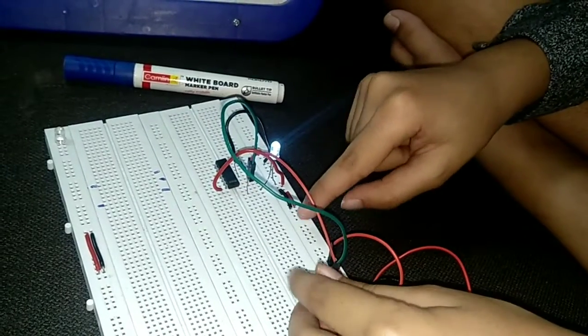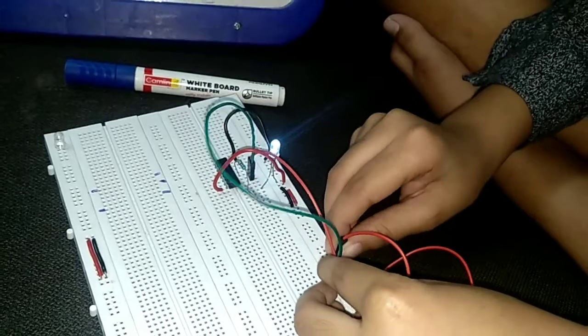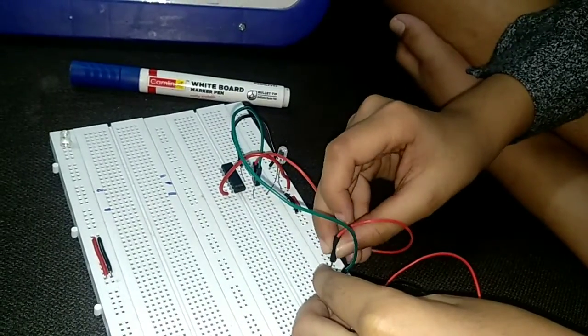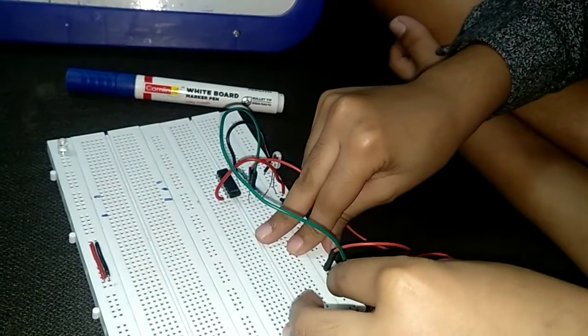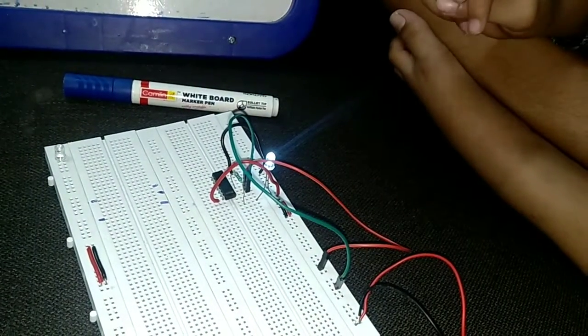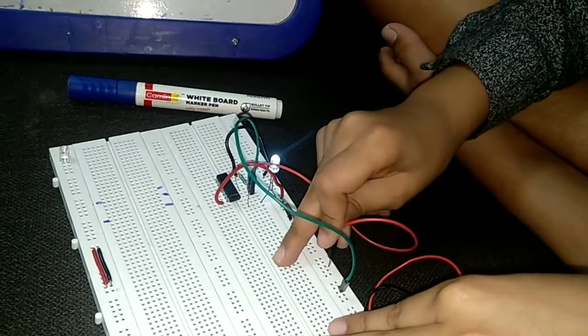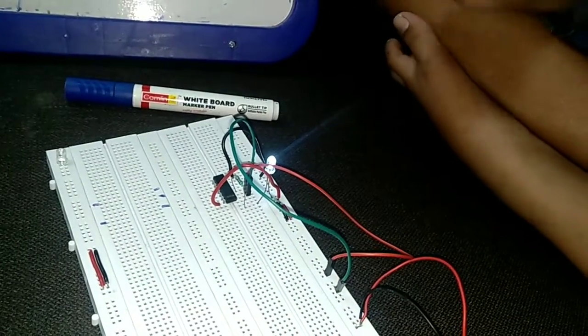When I connect input B to plus, the LED glows. Now when I connect input B to plus then it glows. When I connect both input A and B to plus then they glow. OR gate works.